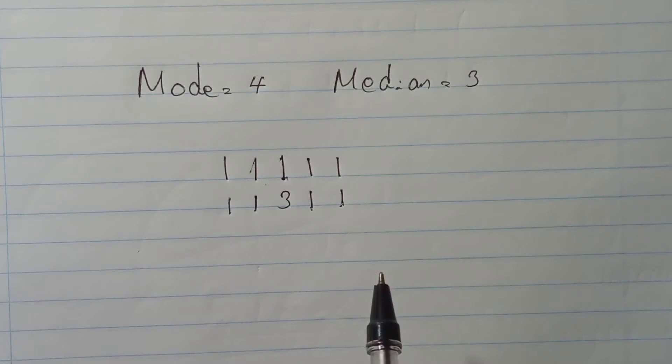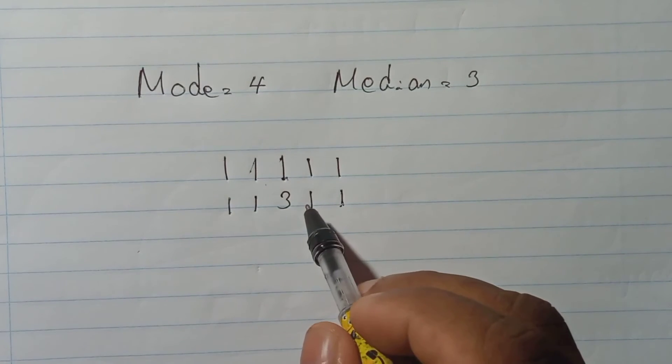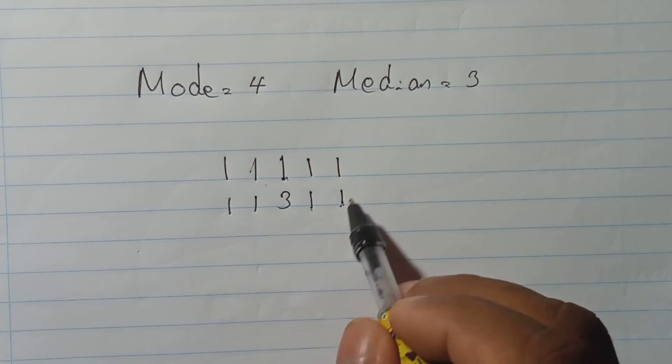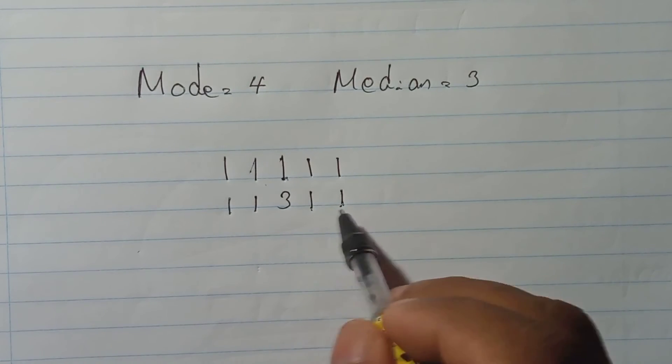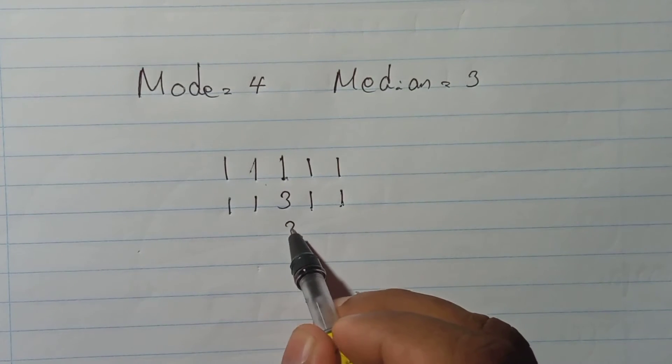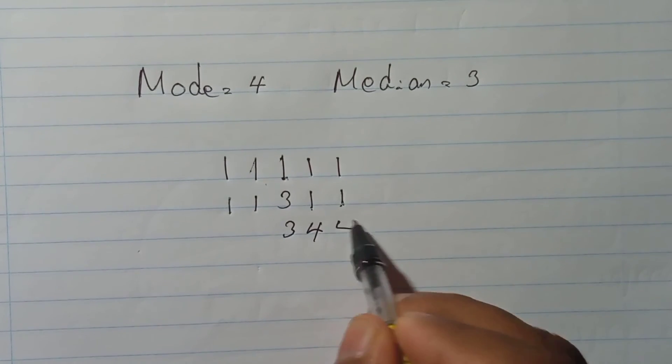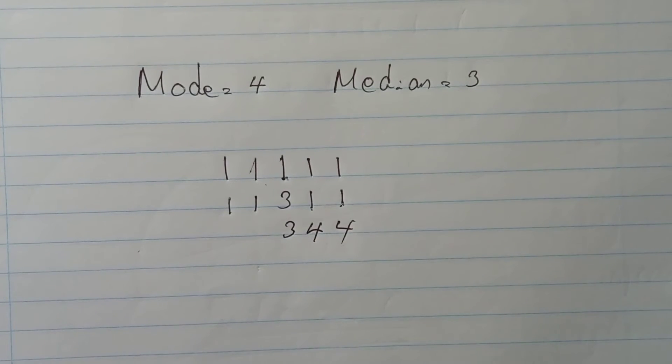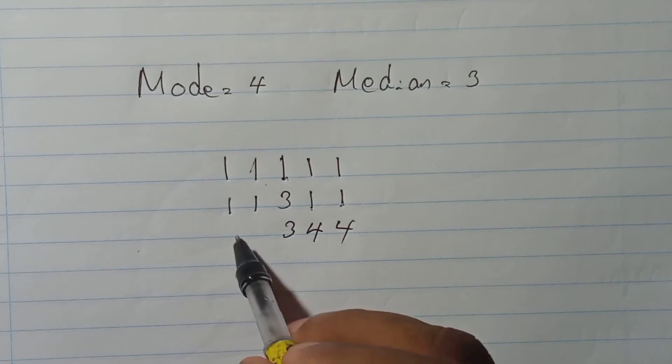So it must be more than one time. Here only two spaces we have now. These both must be 4 to become 4 is the mode. So easily we can decide that way. Here should be 4, here also should be 4. And then in the right side, sorry left side, here should be...